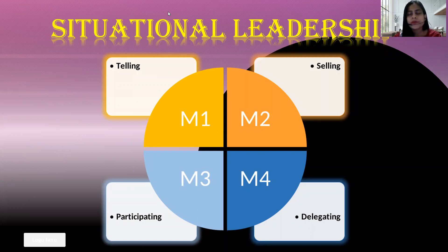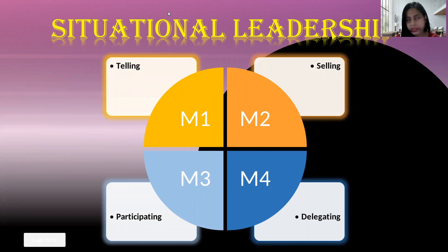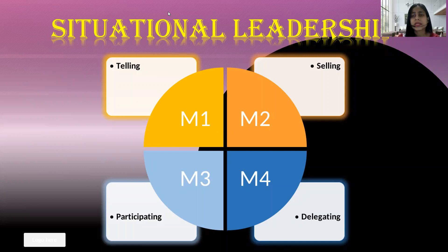You are seeing a figure right in front of you. What do you understand by this figure — by this quadrant that the circle is divided into four different quadrants? Why is it divided? What is the use of that? There are four simple things mentioned there: telling, selling, participating, delegating.